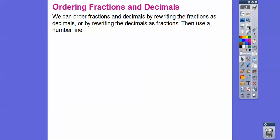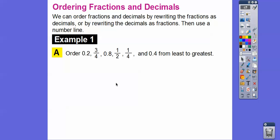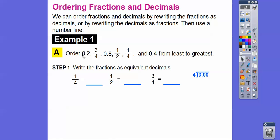We can order fractions and decimals by rewriting the fractions as decimals or by rewriting the decimals as fractions, then using the number line to order them from least to greatest. Let's order all these numbers from least to greatest. One way is to write the fractions as decimals: 1 fourth is 0.25, and we probably already know 0.45. To change a fraction to a decimal, divide the bottom into the top. So 4 goes into 3.00 — 4 goes into 30 seven times, 4 times 7 is 28, subtract to get 2, bring down the zero, 4 goes into 20 five times. So 3 fourths equals 0.75.